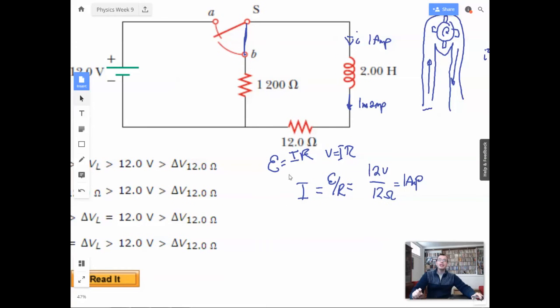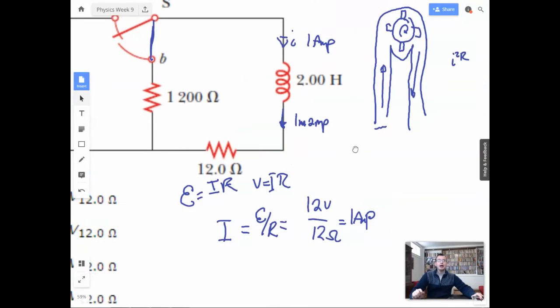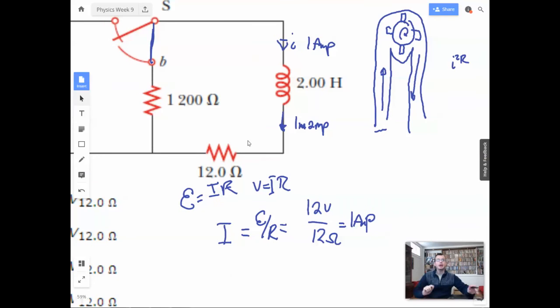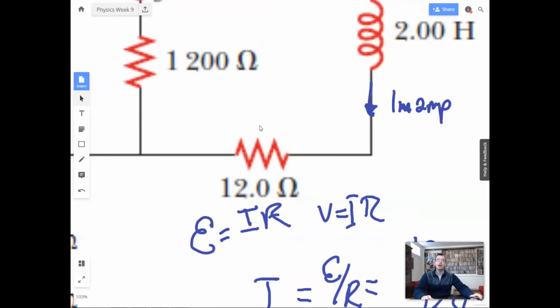So we're going to have 1 amp going through this resistor and we're going to have 1 amp going through that resistor. So we now need to find, we can now find the voltage drop across this guy. I'm going to start off by finding the voltage drop across this guy right here. So this is going to be V equals IR, which in this case is going to be 1 times 12. This is going to be 12 volts.